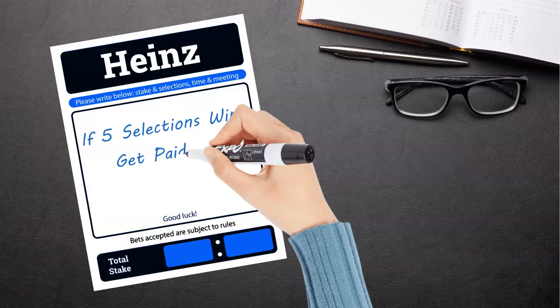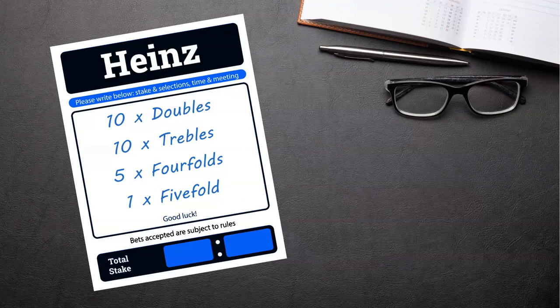If five win, you'll get paid on 26 bets, that's ten doubles, ten trebles, five fourfolds and one fivefold accumulator, and if all six win you'll get paid on all 57 bets.